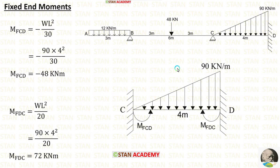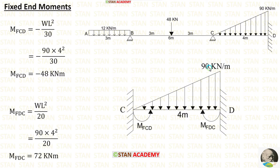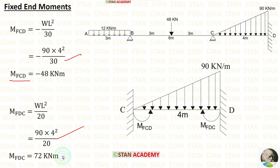Now let us calculate the fixed end moments in the span CD. In span CD there is a uniformly varying load that varies from 0 at point C to 90 at point D. The formulas for the fixed end moments are minus WL² upon 30 and WL² upon 20. Applying W = 90 and L = 4, we get M of CD and M of DC.